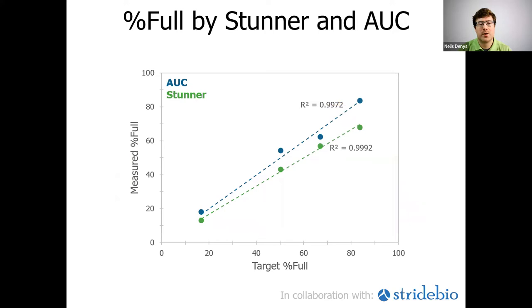Working with StrideBio again, we examined how Stunner's quantification of percent full compares with AUC for a highly purified sample. AUC was read for the highest enriched percent full sample, and dilutions with empty capsids were used to create the target percent fulls. AUC and Stunner correlate very nicely, and both are highly linear as shown by the high R-squared values. But more importantly again, AUC would require orders of magnitude more sample than Stunner, and it will take way longer than the 45 seconds a single Stunner needs.